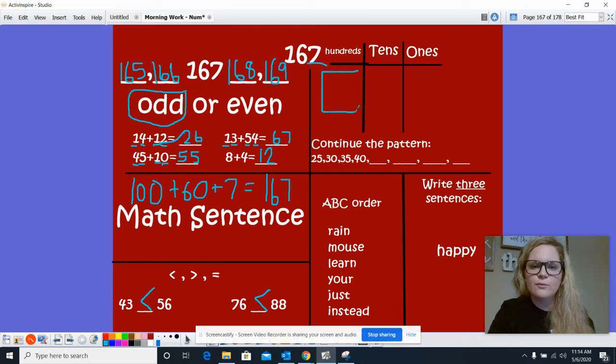How many hundreds do we have? 1. How many tens? 6. 1, 2, 3, 4, 5, 6. And 1's. 1, 2, 3, 4, 5, 6, 7. All right.